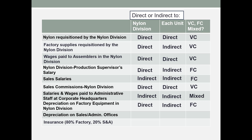Depreciation on sales and administrative offices would be indirect to the nylon division, indirect to each unit, and considered a fixed cost. Insurance on the factory: because there are two departments in that factory, it would be indirect to the nylon division and indirect to each unit. Insurance would be considered a fixed cost for the time period.